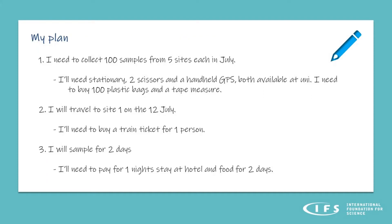Note whether each item is already available in your institute or university or if you will need to buy it. Here is an example of what a plan might look like. To start my project, I need to collect 100 samples from 5 sites in July. For this task I'll need stationery, 2 scissors, and a handheld GPS — all already available at my university. However, I will need to buy 100 plastic bags and a tape measure. I'll also have to travel to Site 1 on the 12th of July, buying a train ticket for one person, and spend two days there, paying for a hotel for at least one night and food for two days.